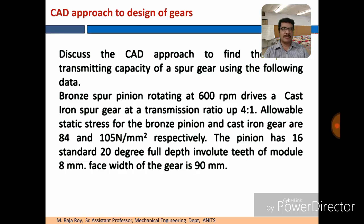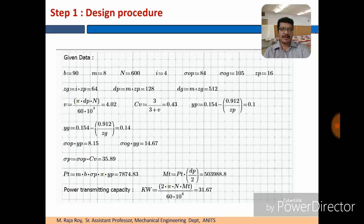Allowable static stress for bronze pinion and cast iron gear are 84 and 105 N/mm² respectively. The pinion has 16 standard 20 degree full depth involute teeth and module is 8 mm. Face width of both gears is 90 mm only. After reading this problem, extract the given data.